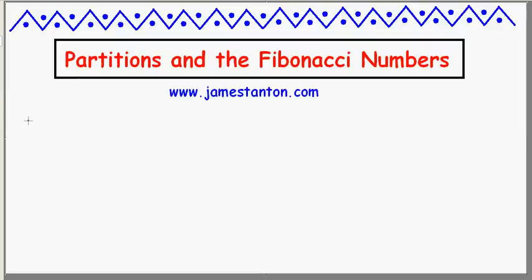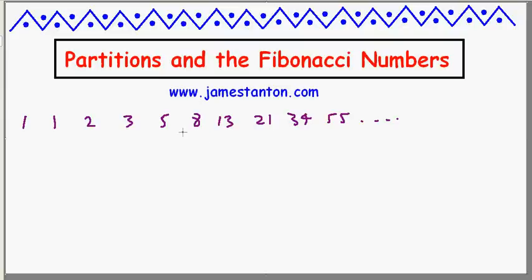The Fibonacci numbers — that's the sequence 1, 1, 2, 3, 5, 8, 13, 21, 34, 55, and so on. It's a very famous sequence of numbers. Each number in the sequence is the sum of the previous two terms. For example, 3 is 2 plus 1, 8 is 5 plus 3, and 34 is 21 plus 13.